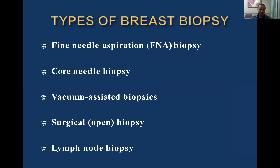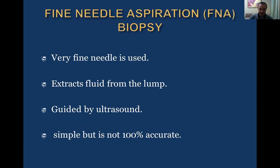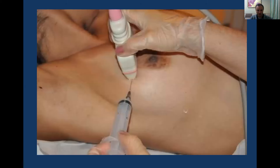Types of breast biopsy include fine needle aspiration biopsy, core needle biopsy, vacuum-assisted biopsies, surgical or open biopsy, and lymph node biopsy. Fine needle aspiration is painless and less invasive than all others. A very fine needle extracts fluid from the lump or some cells, guided by ultrasound. However, it is not accurate in all cases because we only take some cells — this is material for cytological diagnostics only, so we cannot always tell exactly what was taken.